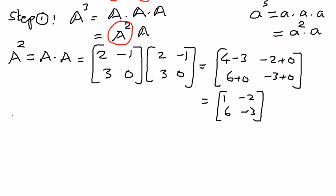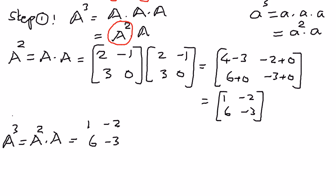Since we want to find A to the power of 3, we write that as A to the power of 2 times A. We already know the product for A to the power of 2, which is 1, negative 2, 6, negative 3. Then we take that and multiply it by the original matrix A, which is 2, negative 1, 3, and 0.